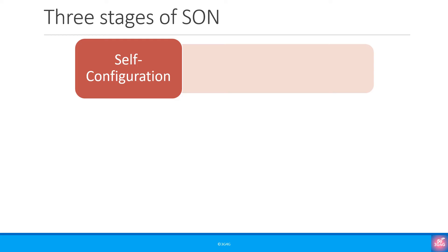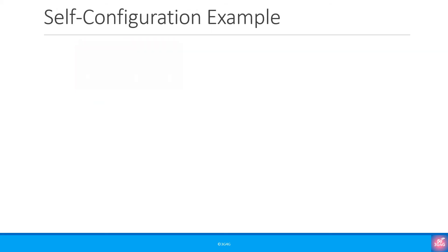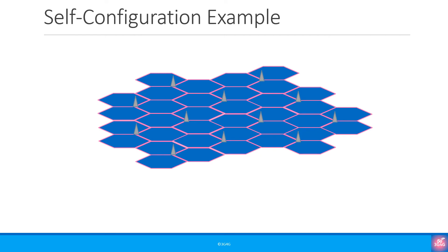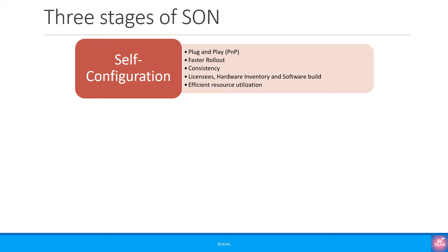Coming back to SON, there are three stages. The first one is self-configuration, which is basically plug and play, allowing faster rollout and consistency across rollouts. It also ensures that the base station, small cells, or radios have the right hardware, software, and configuration. For example, when an operator brings coverage to a new area, they deploy and configure the first base station, and the others must figure out which codes to use, how much power to use, who their neighbors are, and so on — by themselves — to ensure the network functions as expected.